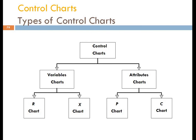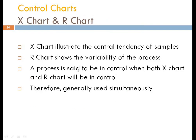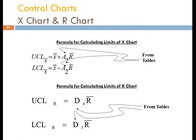In this video we will be taking a numerical and solving a question on numerical data — the calculation of formulas and the plotting of values for variable charts and attribute charts. For the R chart and X chart: the X chart illustrates the central tendency of the sample, meaning the average or mean value, whereas the R chart shows the variability of the process from the central line, which means the range. A process is said to be in control when both X and R charts are in control, so they are generally used simultaneously.